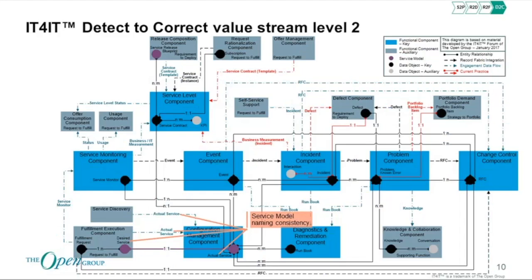Finally, detect to correct at level two is the least impacted in v2.1. It's really just the service model naming consistency that changed — there isn't really anything coming in from the IT financial management side on detect to correct. The fact that it's running has nothing to do with financial management; that all happens at request to fulfill. Anyone working in the D2C area won't see significant changes except that 'actual service CI' is now called 'actual service.' The way you model an actual service is probably as a network of configuration items from existing CMDB technologies, but it's abstracted as an actual service.